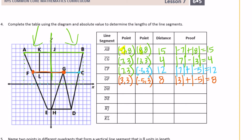Segment DH: D is at 5, negative 6 and H is at 0, negative 6. Since one coordinate is 0, we can add or subtract — it doesn't matter. Absolute value of 5 plus absolute value of 0 equals 5. The distance is 5.